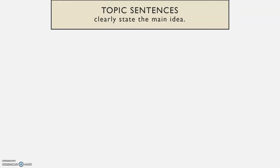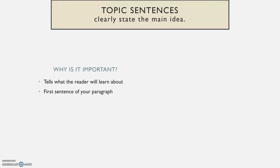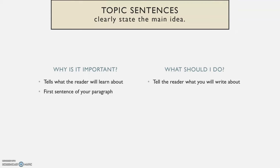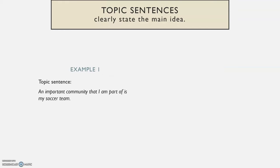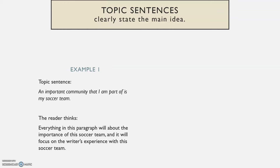First, topic sentences need to clearly state the main idea. This is important because it tells the reader what they will learn about. It's usually going to be the first sentence of your paragraph, so it should be clear what your main idea is. Tell the reader exactly what you'll write about. Here's an example: "An important community that I am part of is my soccer team." When I read this sentence, I think everything in this paragraph will be about the importance of this soccer team and it's going to focus on the writer's experience with this soccer team.